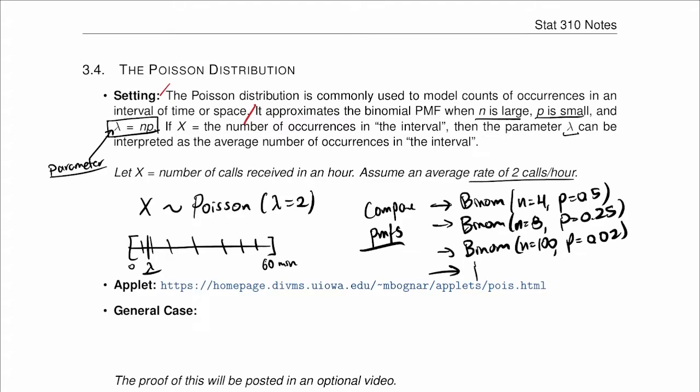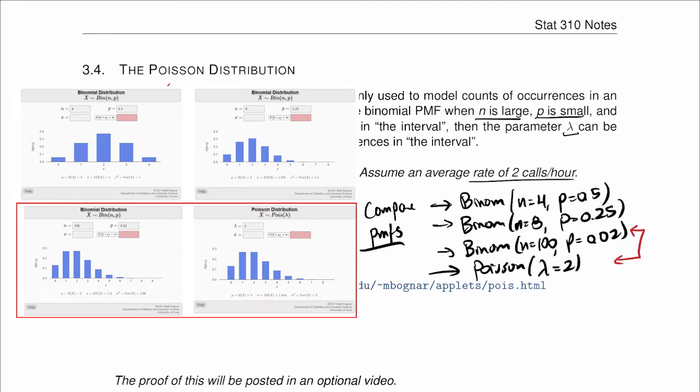And we compare them with the Poisson distribution with parameter lambda equal to 2, we can see that the approximations of these two are very good, because n is large, p is small, and n times p is lambda equal to 2.